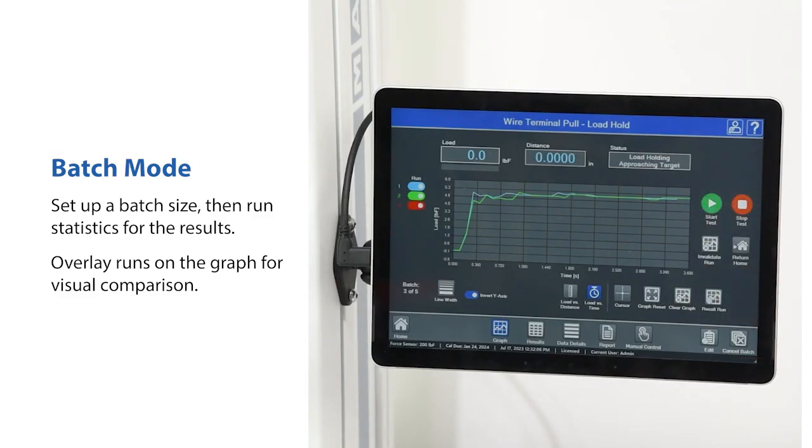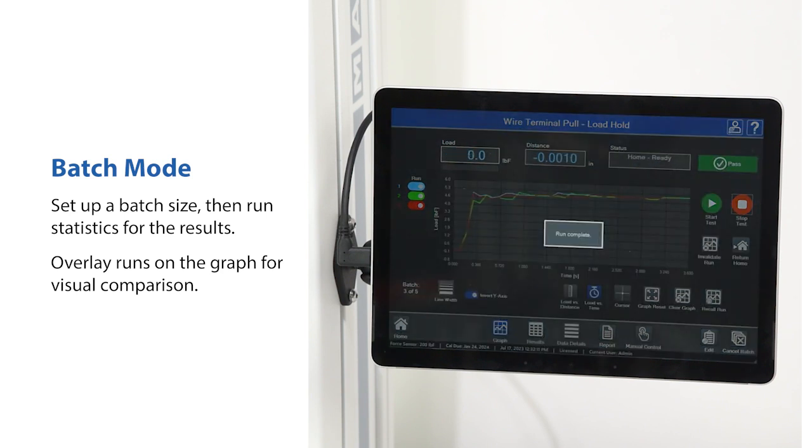Batch mode is used to specify a batch size, then run statistics for the results. Overlay runs on the graph for visual comparison.